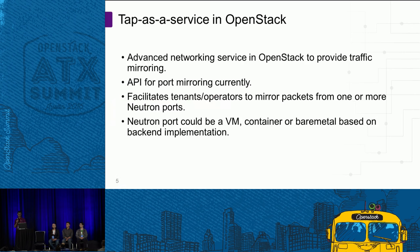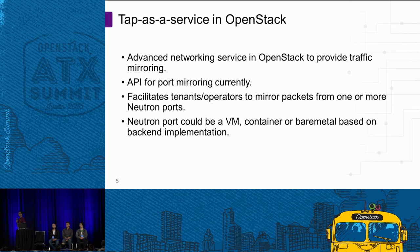TAP as a Service is an extension in Neutron — an advanced services extension — which works just like Firewall or Load Balancer. You interact with Neutron APIs and it will provide you port mirroring. If you have a bunch of Neutron ports that you want to monitor, you can use this Neutron extension to redirect or copy packets from those ports onto a destination port that you define.